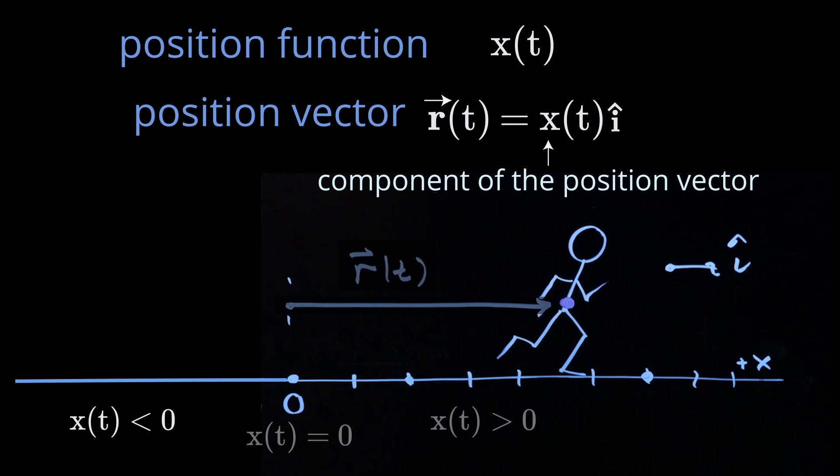And if x of t is positive, positive i hat position vector, as shown in this particular case, is in the positive i hat direction. So that's our first vector, the position vector in one-dimensional motion.